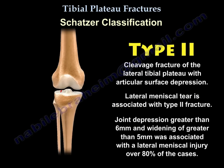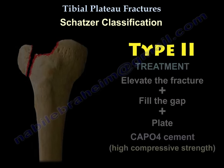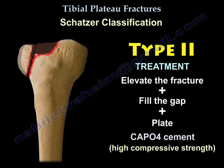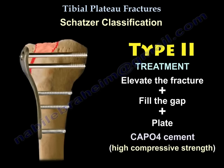Type 2 is a cleavage fracture of the lateral tibial plateau with articular surface depression. The lateral meniscal tear is associated with this type of fracture. Joint depression greater than 6 mm and widening greater than 5 mm is associated with lateral meniscal injury in over 80% of cases. Treatment is to elevate the fracture, fill the gap, and add a plate. You can fill the gap with calcium phosphate.